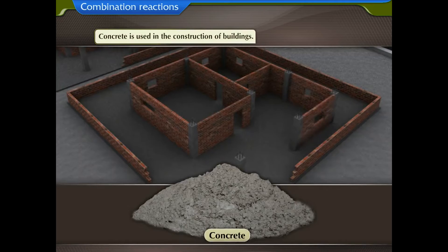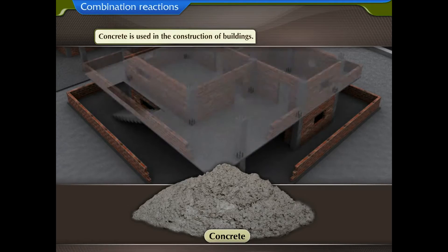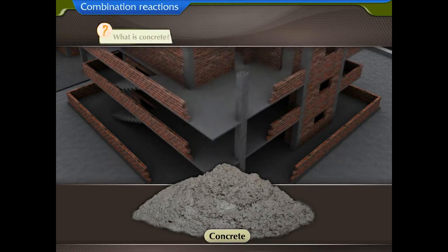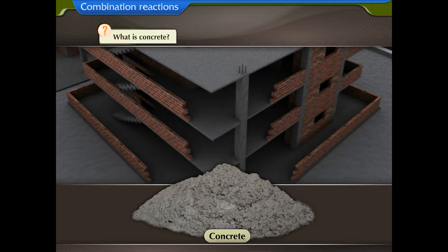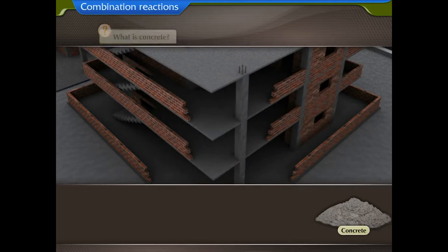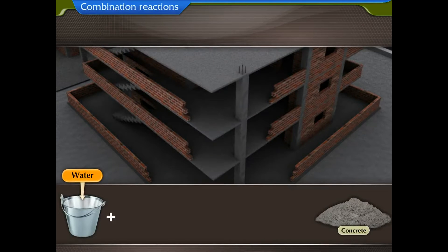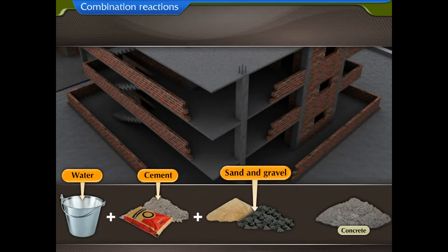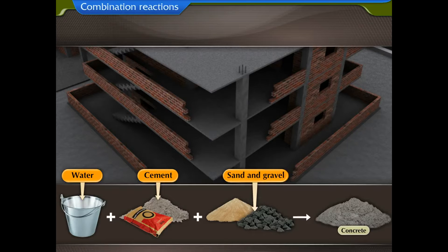Concrete is used in the construction of buildings. When water is added to a mixture of cement, sand and gravel and allowed to set, it imparts strength to the building. The substance so obtained is called concrete — this is also a combination reaction.